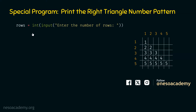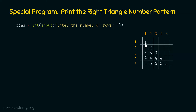After receiving the number of rows, we need nested for loop structure to print the pattern. The outer for loop represents the rows, and the inner for loop represents the columns. We write: for i in range(1, rows + 1). Variable i represents the row number, and we get values from 1 to rows from this range function.